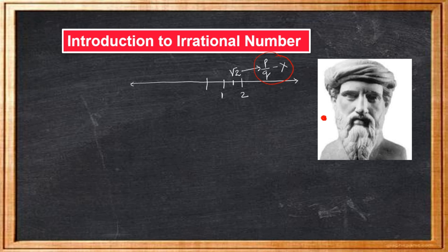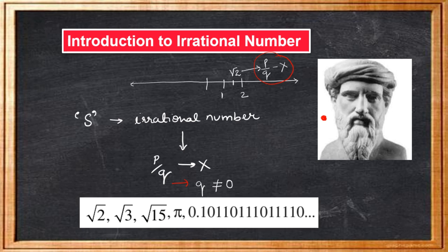Let us formally define these numbers. A number s is called irrational if it cannot be written in the form p by q where p and q are integers and q is not equal to 0. Some examples are root 2, root 3, root 15, pi and non-terminating numbers like 0.101101 and so on.